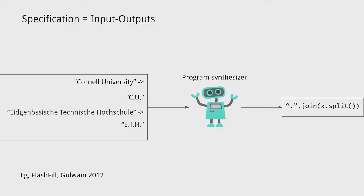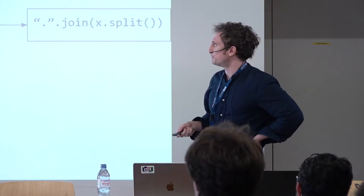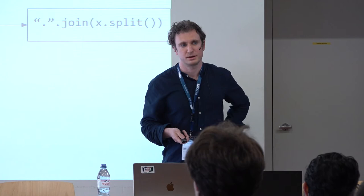Another approach is to give examples of what the machine should do. By far the most famous system for this is FlashFill. For instance, you might want to abbreviate university names — Cornell University goes to CU, ETH goes to ETH — and the system produces Python code or a domain-specific language for string processing macros.